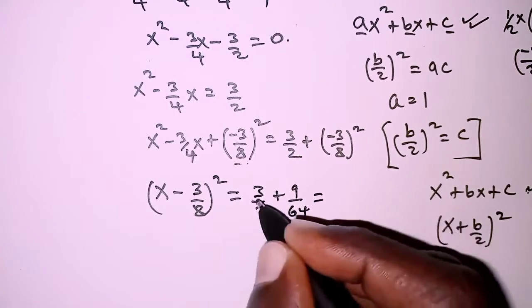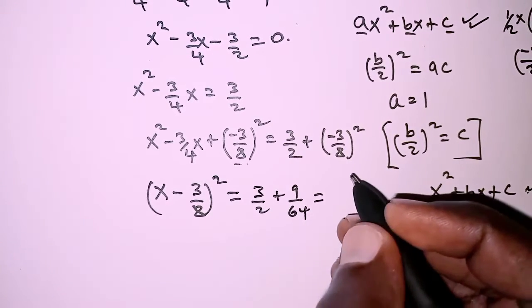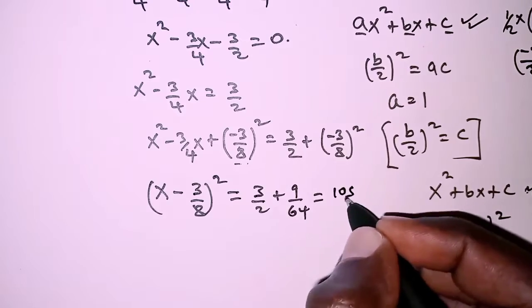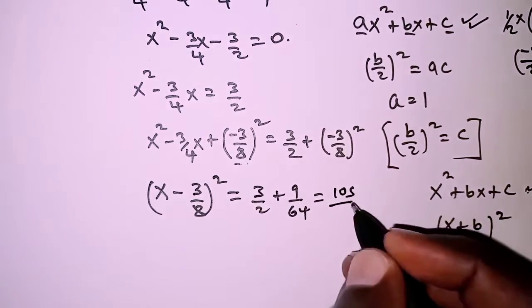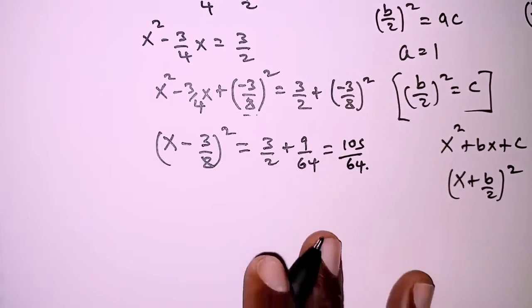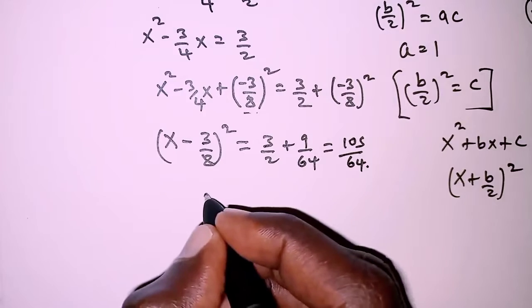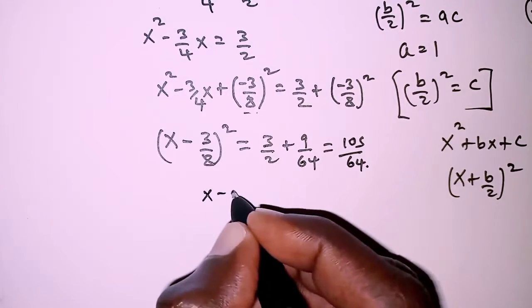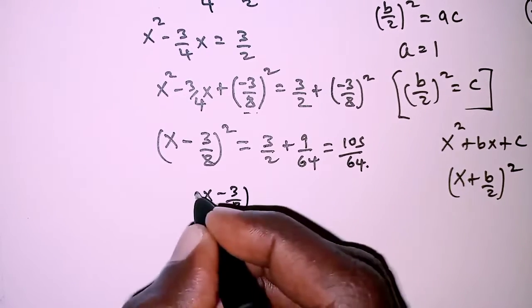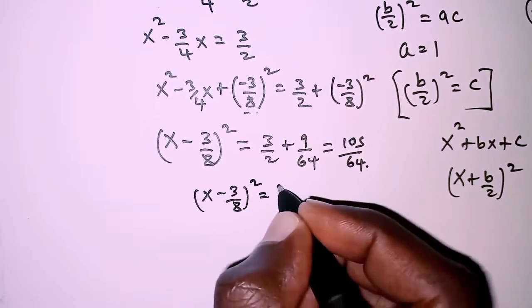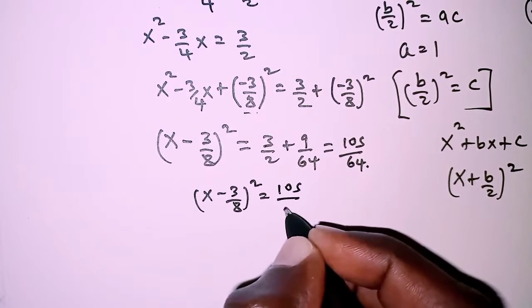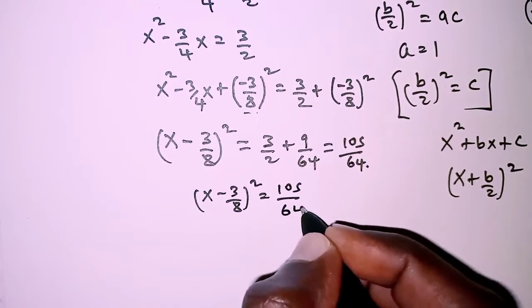Adding those together gives us 105 over 64. So in other words, we have x minus 3 over 8 squared equals 105 over 64.